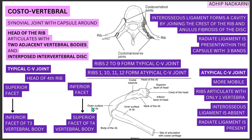There are two types of costovertebral joint: typical and atypical. Ribs from T2 to T9 form the typical costovertebral joint, while ribs 1, 10, 11, and 12 form the atypical costovertebral joint.